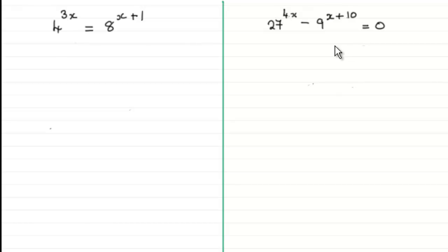Welcome back if you had a go. So in this first one, first of all we've got it in the correct form — that is, we've got two terms: one term here equals another term here. Remember, you can only solve these if you reduce them down to two terms.